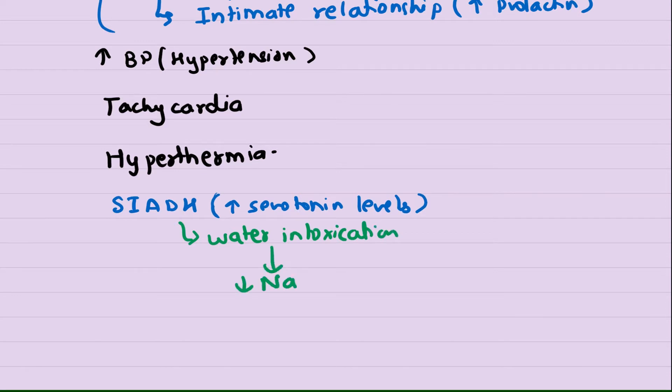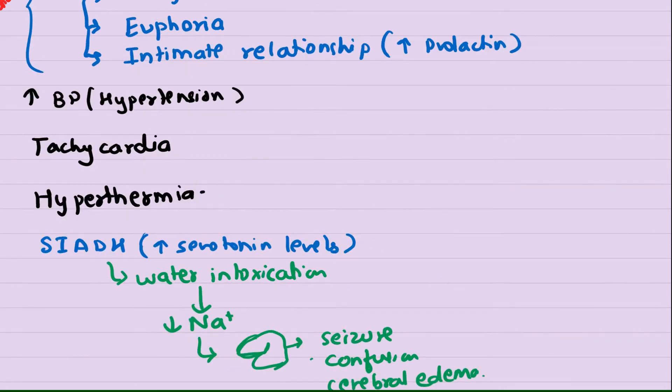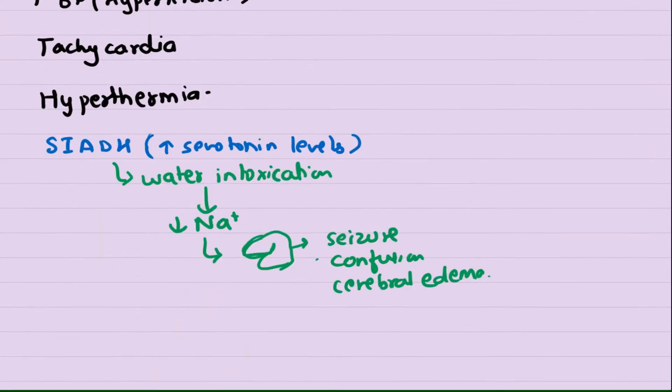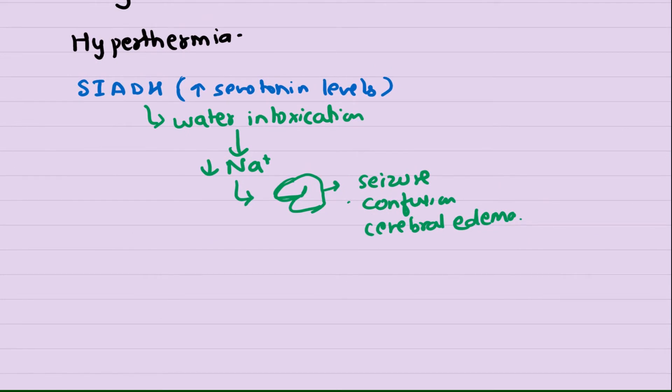Apart from that, it can cause seizures, confusion, and cerebral edema. It can also cause death in the patient. Because of the euphoric state-like feature, the patient is more excited and in a state of euphoria. There can be increase in temperature as well. The muscles can become weak and this can lead to rhabdomyolysis.